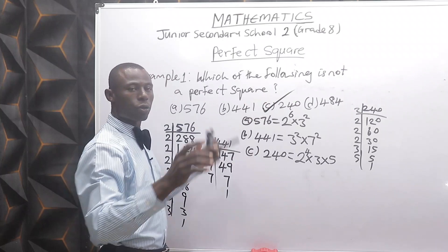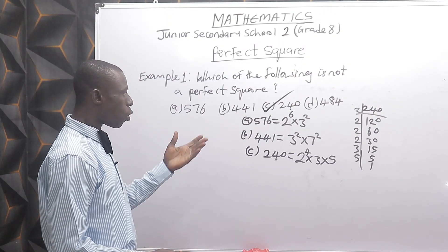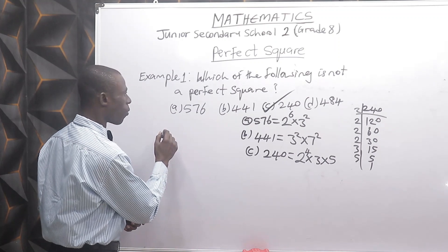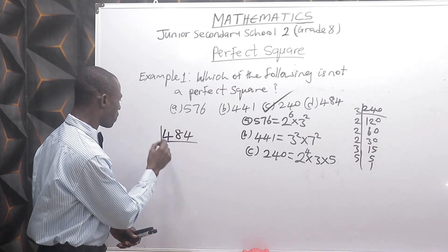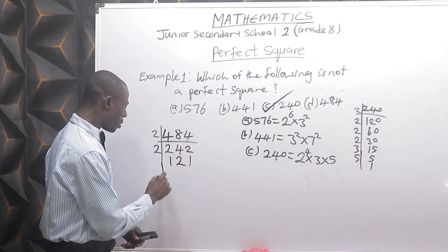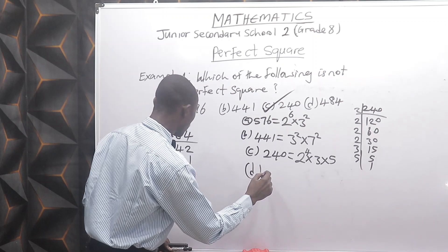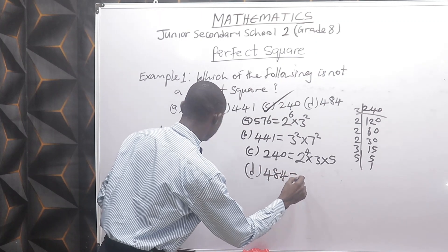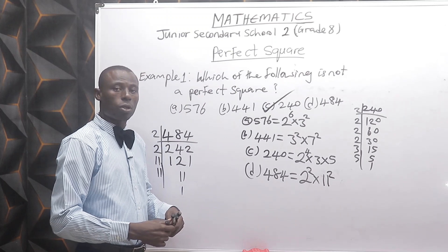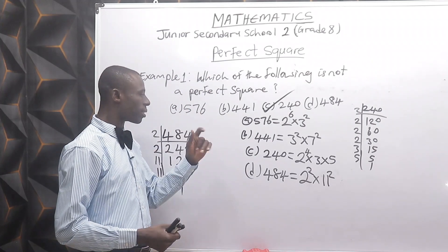So the answer is option C — 240 is not a perfect square. Let's also verify option D, 484, for conviction. Factoring 484 gives 2 raised to power 2 times 11 raised to power 2. All factors carry even powers, so 484 is also a perfect square. That confirms option C is the correct answer.